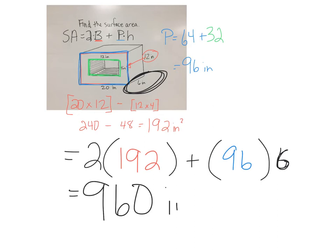Whenever we have a modified shape, we subtract to find the area of the base and we add to find the perimeter of the base.